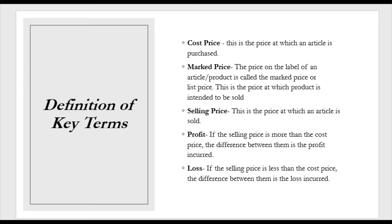Another key term is selling price. This is the price at which an article is sold. For example, you go into a clothes store and you want to buy a pair of jeans, and the store clerk tells you that the pair of jeans costs $2,000. You pay $2,000 for that pair of jeans — that is the selling price of those jeans.